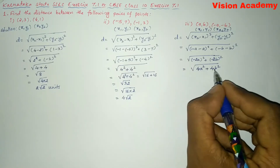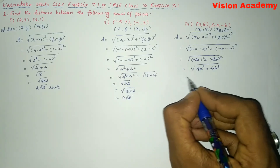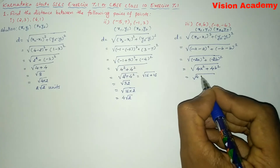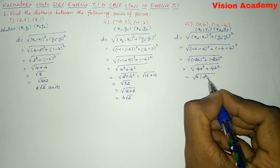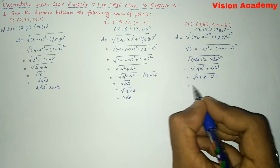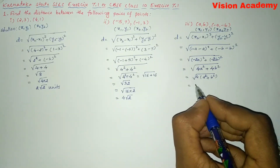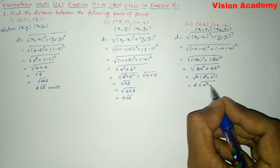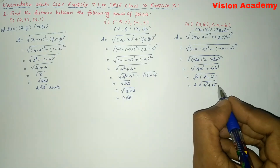Here the common term between these two terms is 4, so let us take 4 outside the bracket, leaving a² plus b² inside. Since 4 is a perfect square, it comes out of the square root and becomes 2, giving us 2 square root of (a² + b²) units.